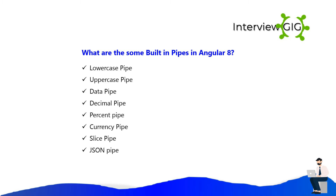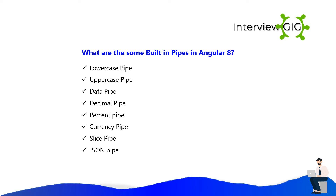What are some built-in pipes in Angular 8? The built-in pipes include: Lowercase Pipe, Uppercase Pipe, Date Pipe, Decimal Pipe, Percent Pipe, Currency Pipe, Slice Pipe, and JSON Pipe.